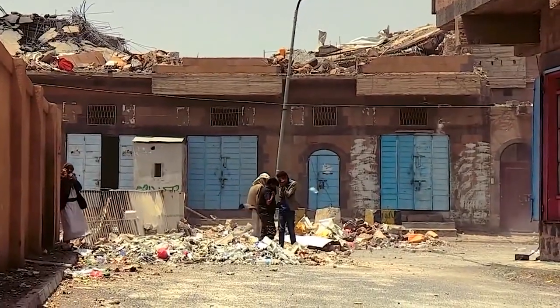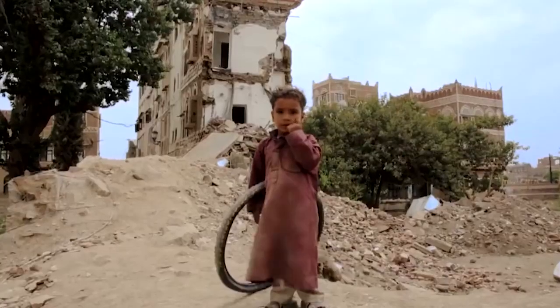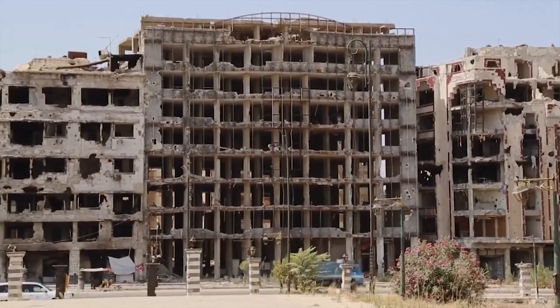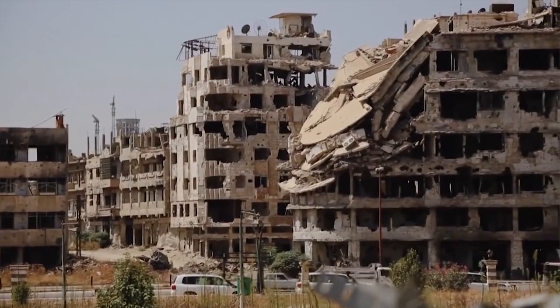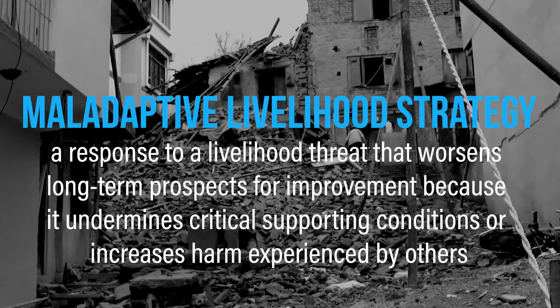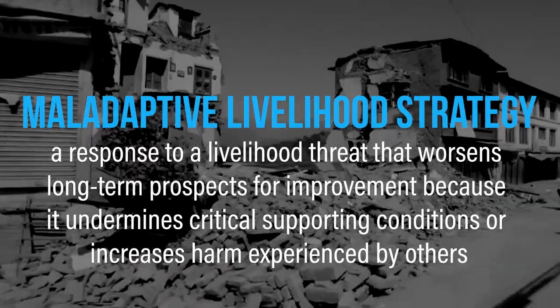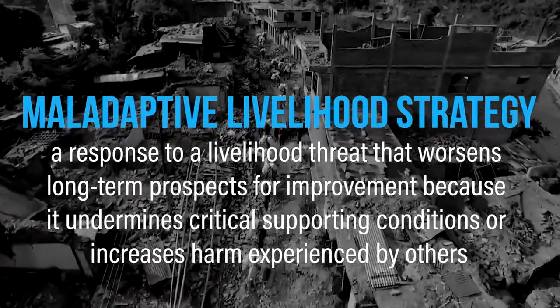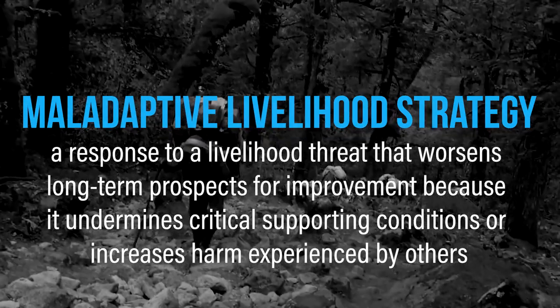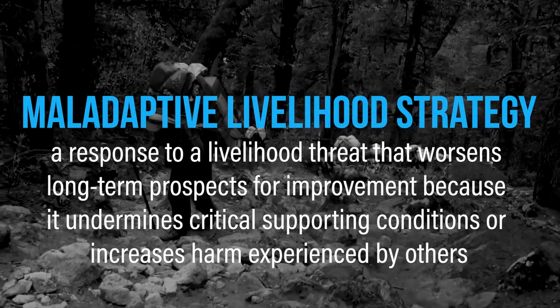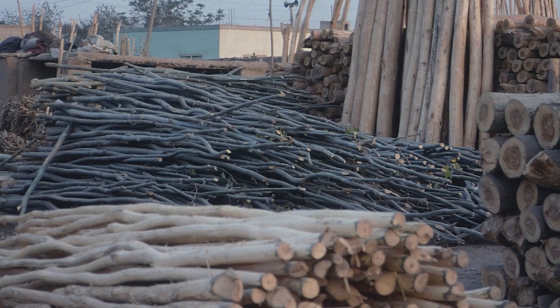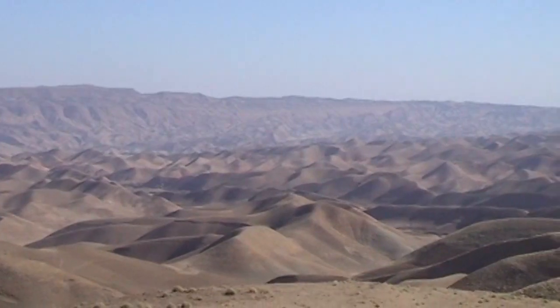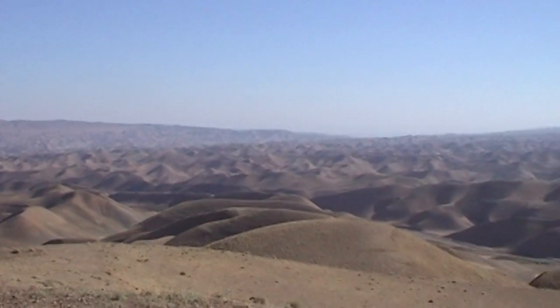When a household is unable to provide for itself through traditional livelihood strategies, it may need to adopt a maladaptive or coping livelihood strategy. Often these strategies are considered inferior because they can devastate the environment if many individuals within the community pursue the same coping strategy during times of difficulty. An example of a maladaptive coping strategy is the cutting down of productive trees, such as the pistachio orchards in Afghanistan that have been used for firewood.